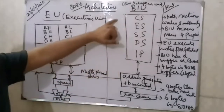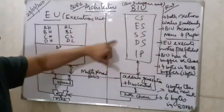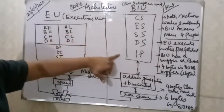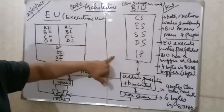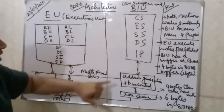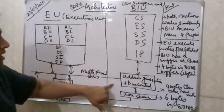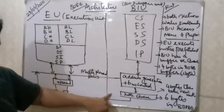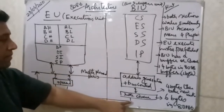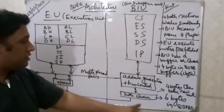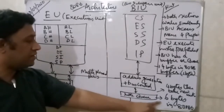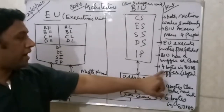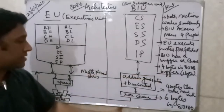Let's look at the main units in the Bus Interface Unit. We have the segment registers: code segment, extra segment, stack segment, data segment, and instruction pointer — these are all 16-bit registers. There is an address adder, a bus controller, and an instruction queue. The instruction queue is 6 bytes in size for the 8086.